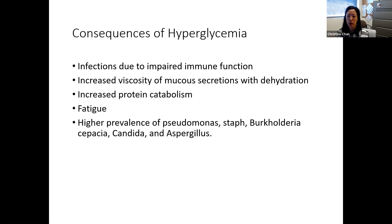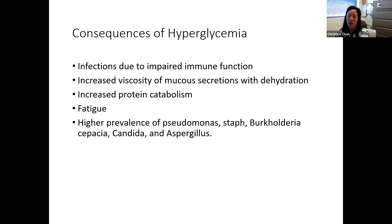What are the consequences of hyperglycemia? Hyperglycemia impairs how the immune system functions — it affects how white cells fight off infection. It can lead to dehydration, increased viscosity of mucous secretions, protein breakdown, and fatigue. Bacteria like glucose — it's a source of fuel for them too. Studies have associated hyperglycemia with a higher prevalence of pseudomonas, staph, B. cepacia, and aspergillus. So bringing down those high glucoses is really important.